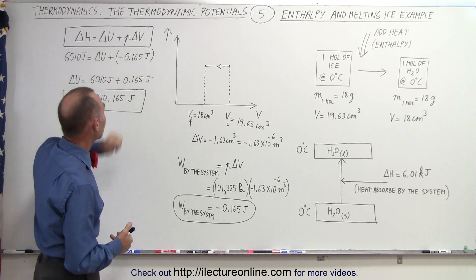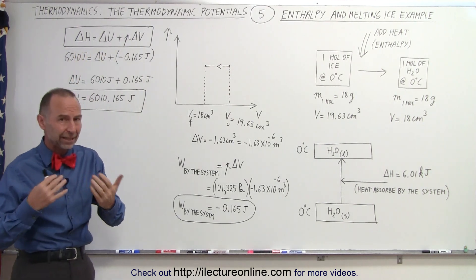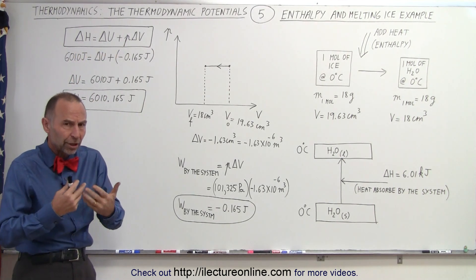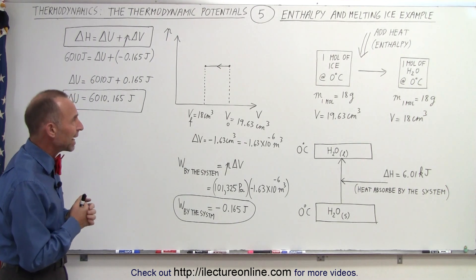Here that delta H is equal to delta U plus P delta V, where P delta V is the amount of work done by the system during the change or during the reaction.